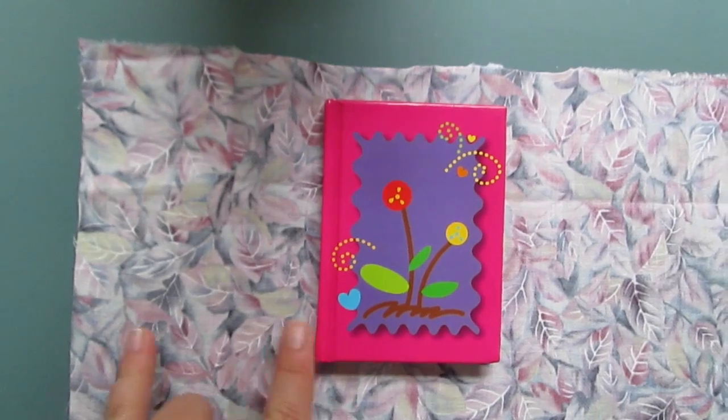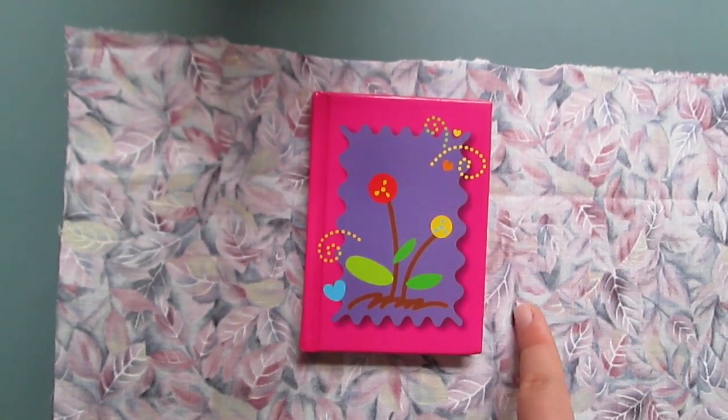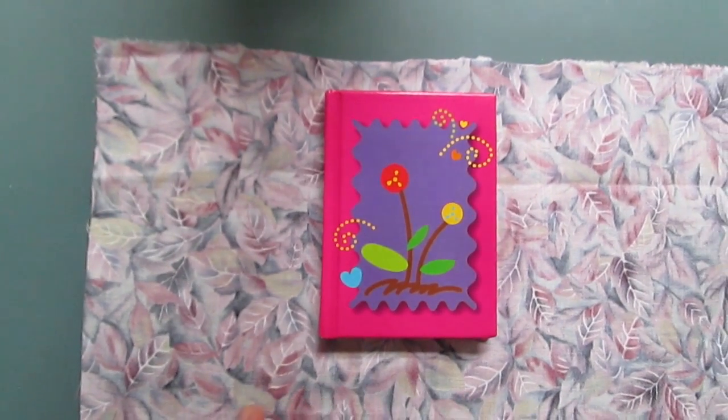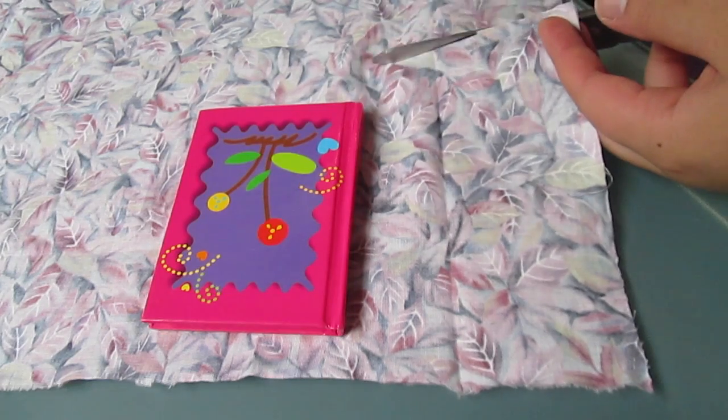So let's get started. First we want to cut out a size of fabric that suits our notebook size. As you can see, you want about double the size of your cover plus about one to two inches around the edge of that.